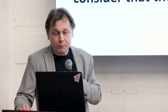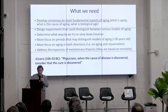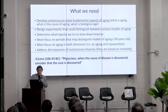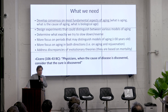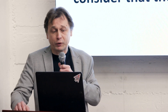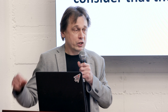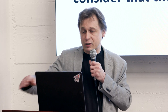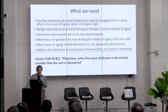What do we need? We need to develop consensus on the fundamental aspects of aging. We need to define what aging is, what the cause of aging is, and what biological age means — because we all mean it differently. We need to design experiments that could distinguish between various models of aging, and determine exactly what we're trying to slow down or reverse. I also think we need to place more focus on periods that distinguish various models — for example, in younger ages — because after age 30, everything goes down: mortality increases, function decreases, damage accumulates, and we can't distinguish well between models.